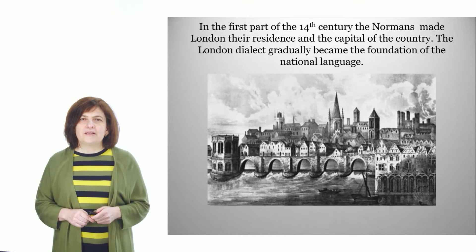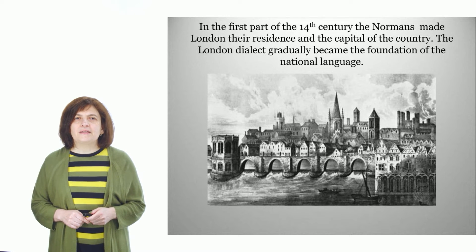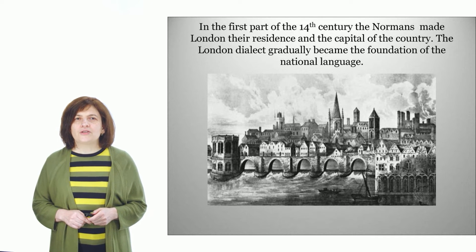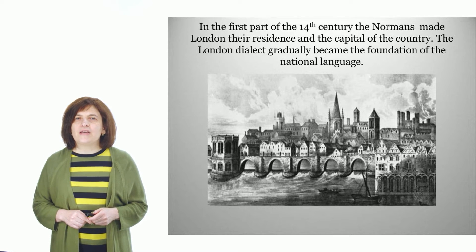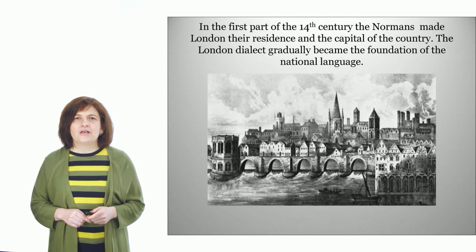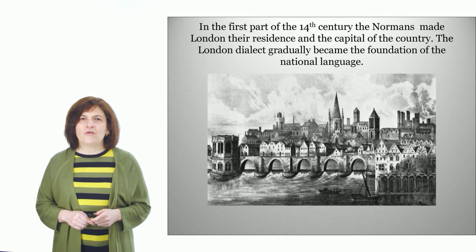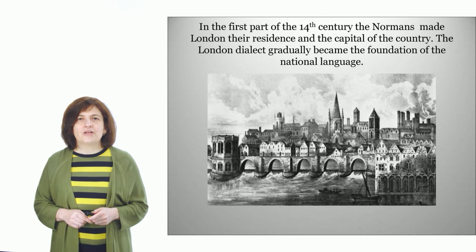The Norman kings made London their residence. The London dialect was the central-midland dialect and it was understood throughout the country. It was the London dialect from which the national language developed. In the 14th century, the English bourgeoisie traded with Flanders, now Belgium. The English sold wool to Flanders and the latter produced the finest cloth. England wanted to become the centre of the world market. Flemish weavers were invited to England to teach the English their trade.